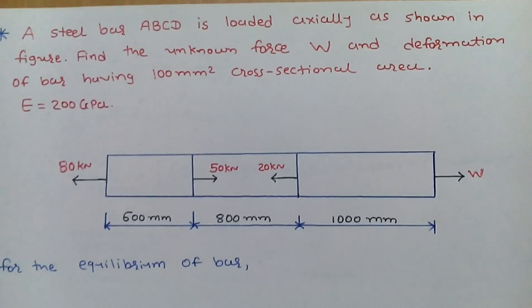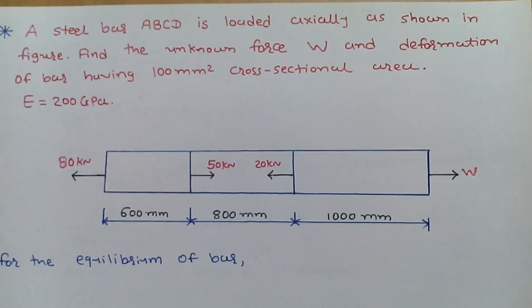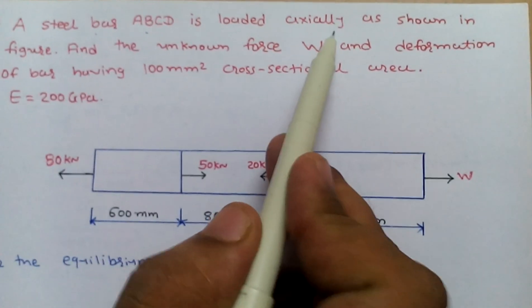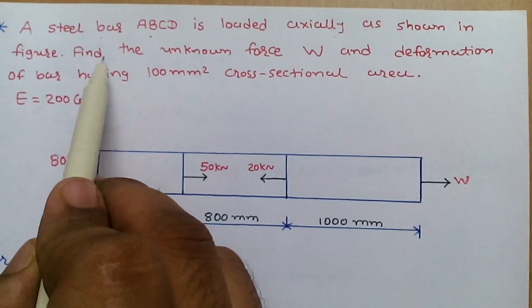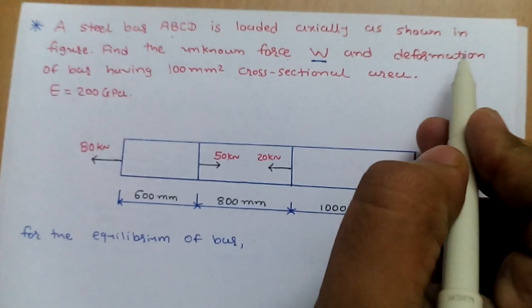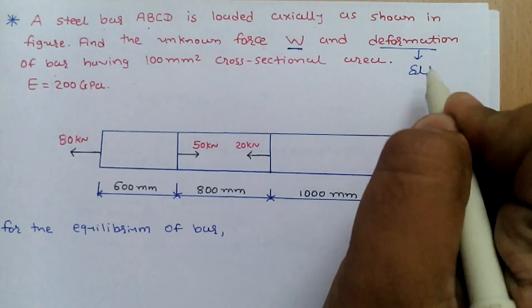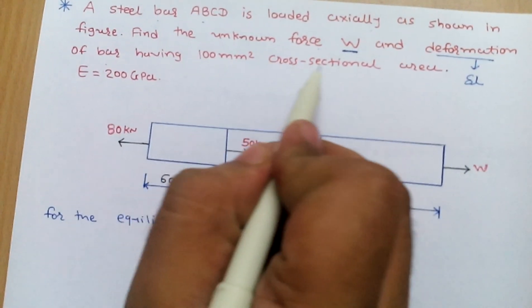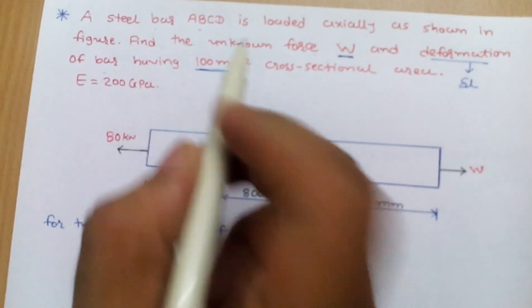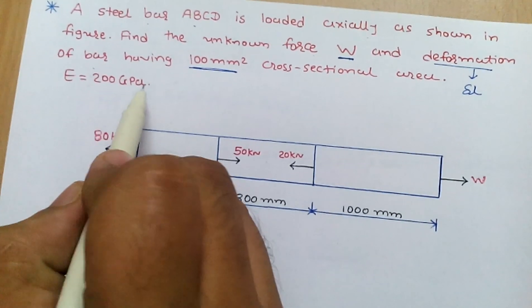Hello friends, today we are discussing examples related to the principle of superposition of forces. In our data, a steel bar ABCD is loaded axially as shown in the figure. Find the unknown force W and deformation of the bar, having 100 mm square cross-sectional area and modulus of elasticity E equal to 200 GPa.